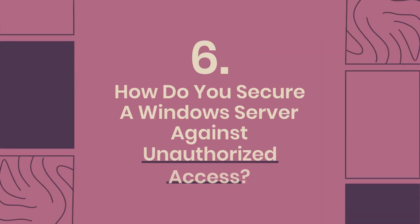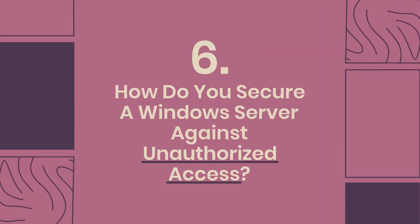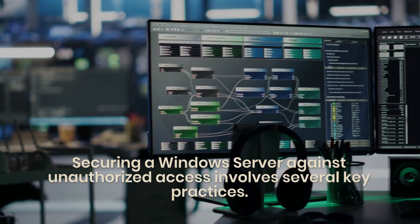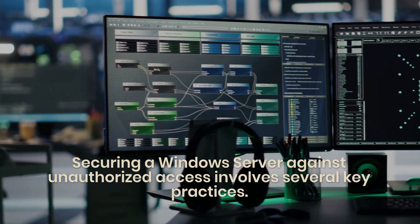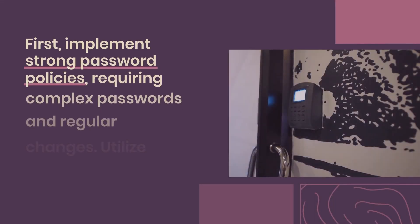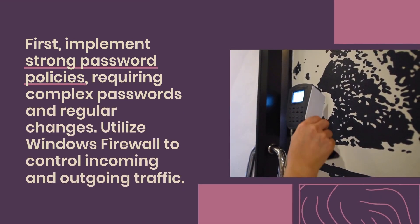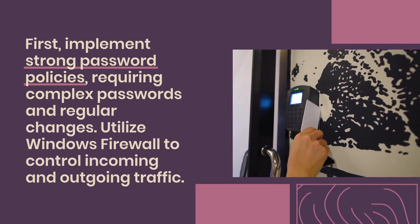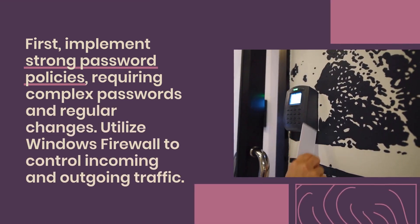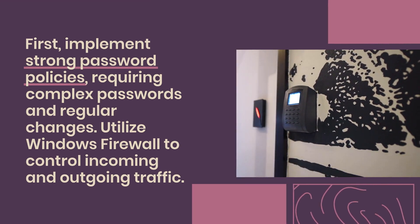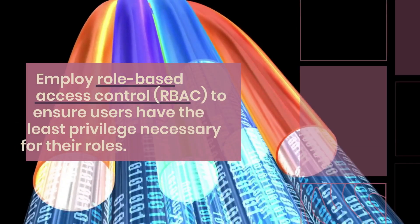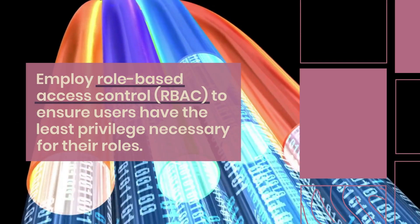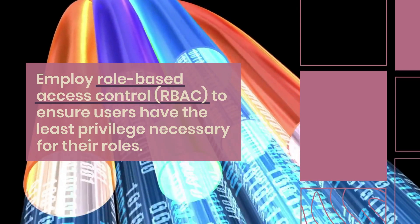Question 6: How do you secure a Windows Server against unauthorized access? Securing a Windows Server against unauthorized access involves several key practices. First, implement strong password policies, requiring complex passwords and regular changes. Utilize Windows Firewall to control incoming and outgoing traffic. Employ Role-Based Access Control, RBAC, to ensure users have the least privilege necessary for their roles.